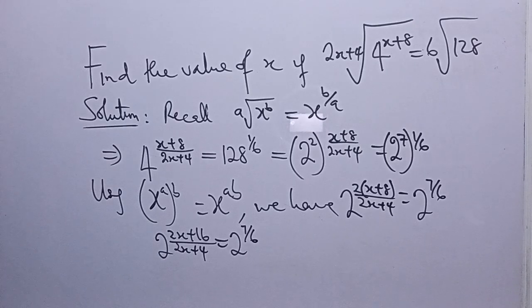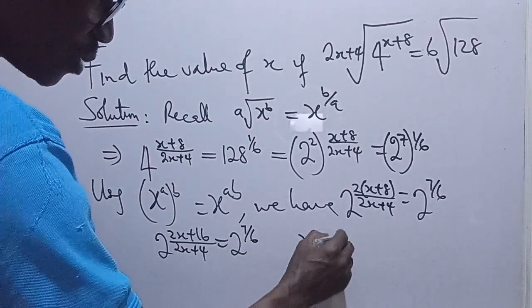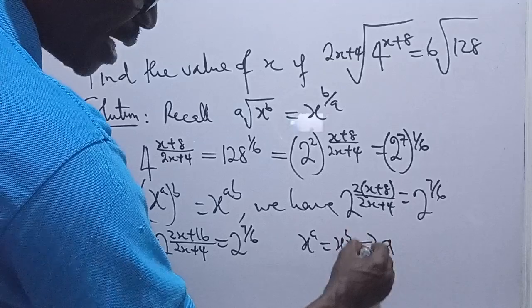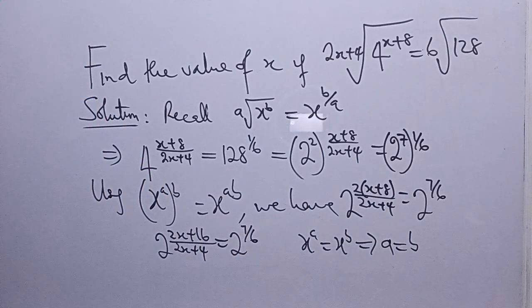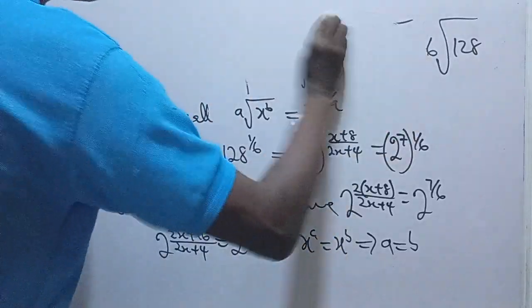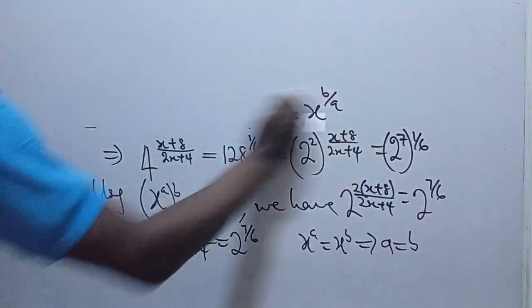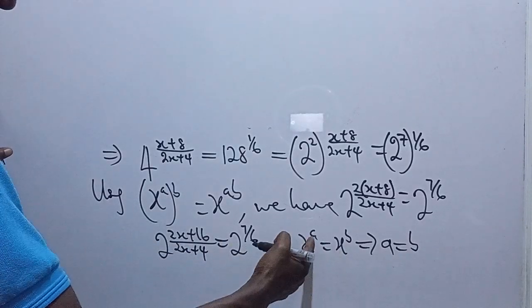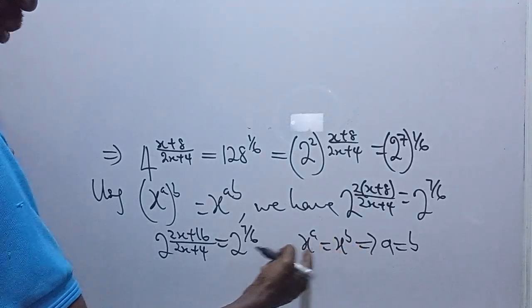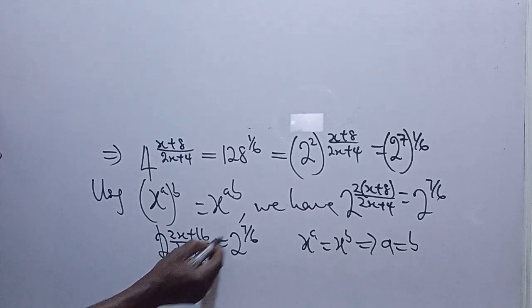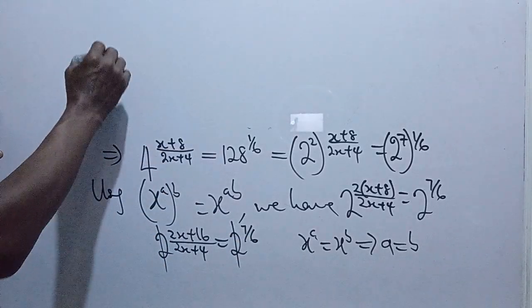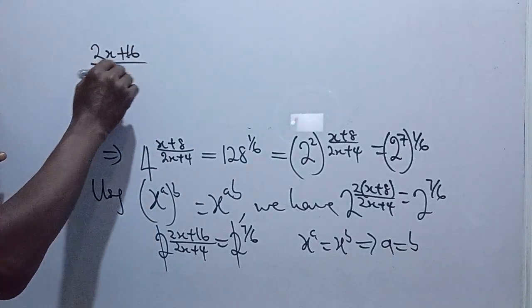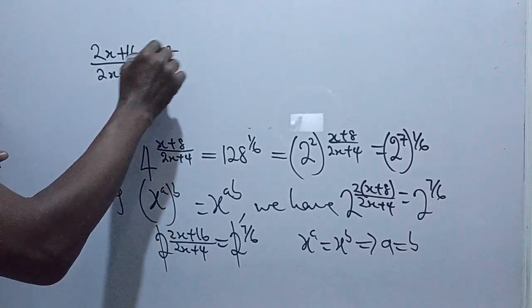Now remember, according to the law of indices, if you have x raised power a is equal to x raised power b, since the bases are the same, the exponents will be the same. This implies a equals b. That's according to the law of indices. So in this case now, let's continue here. So we have enough space to work with. That means we can have, so like I said, if x raised power a is equal to x raised power b, since the exponents x are the same, so a will be equal to b. So in this case now, the bases 2 will cancel out. So we now have 2x plus 16 all over 2x plus 4 is equal to 7 over 6.